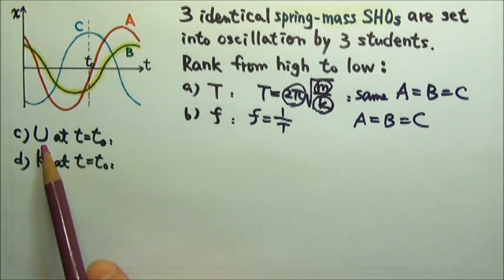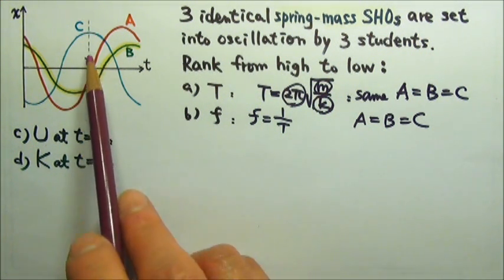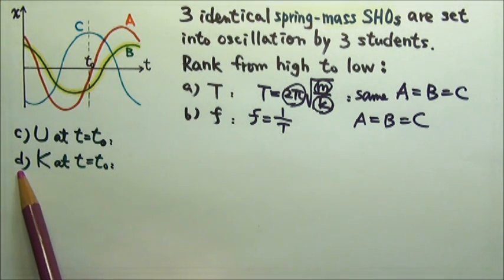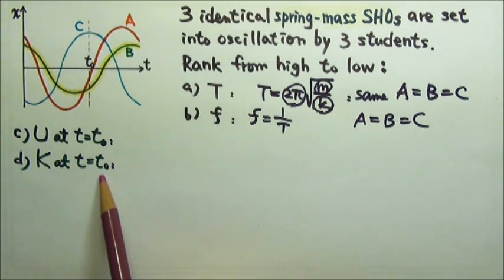And C, rank the potential energy of the oscillators at T equals T₀. And D, rank the kinetic energy of the mass at T equals T₀.